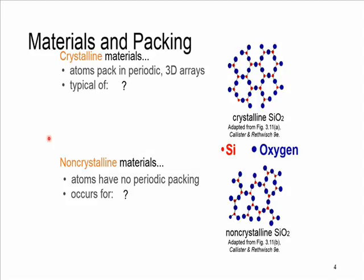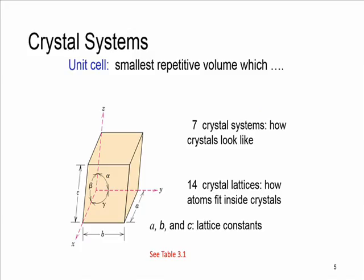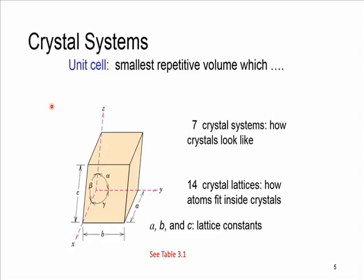Amorphous is the other word for non-crystalline material. In these materials, there is no more periodic packing. Non-crystalline or amorphous materials are discussed at the end of the chapter. In crystal structure, it is preferred to divide the whole structure into small repeat entities that we know as unit cells. These units are the smallest repeating unit, meaning we can make the whole crystal structure by setting unit cells beside each other.